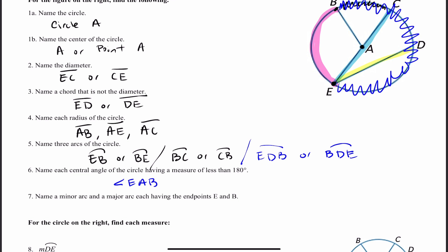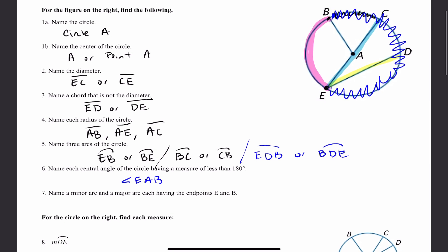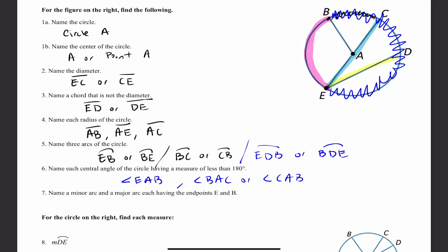Angle EAB: you can have B first or E first, as long as A is written in the middle. What about angle BAC? Yes, because the vertex is at the center of the circle — so angle BAC, or equivalently angle CAB. Also angle BAE. But these two central angles are your main answers.